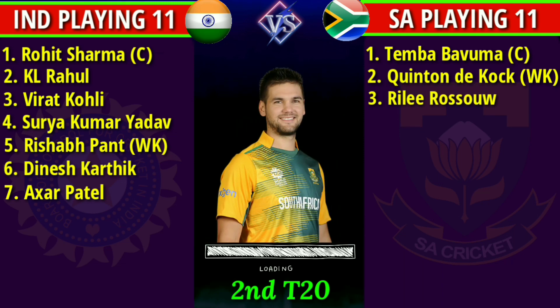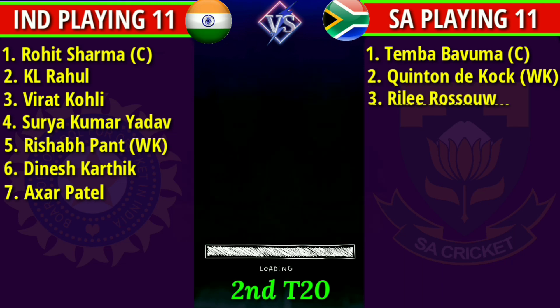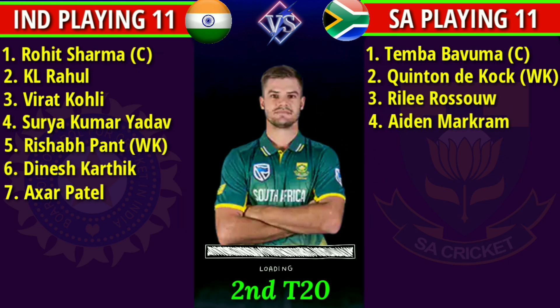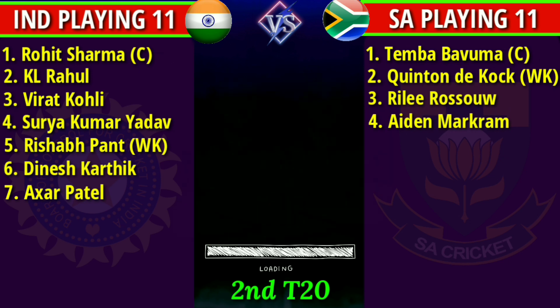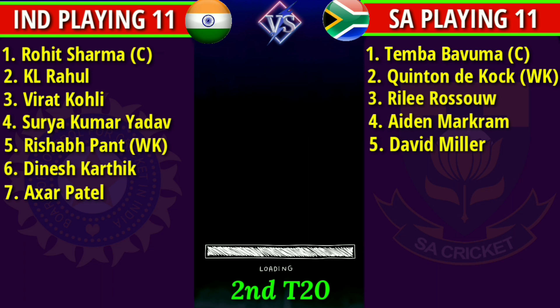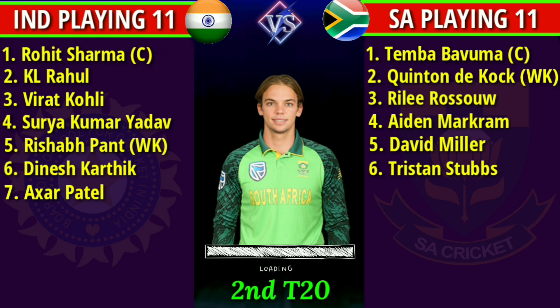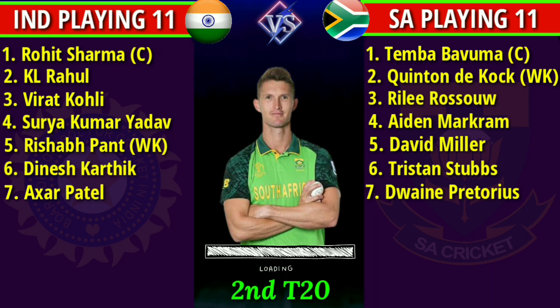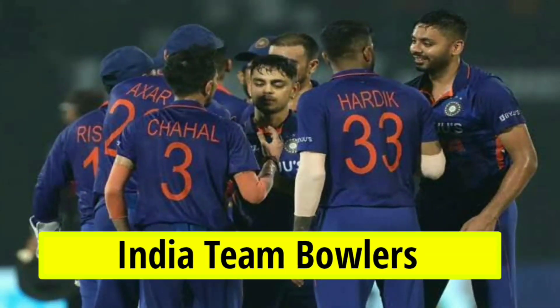Team South Africa Middle Orders: 3. Rassie van der Dussen, Left-Hand Batsman. 4. Aidan Markram, Right-Hand Batsman. 5. David Miller, Left-Hand Batsman. 6. Tristan Stubbs, Right-Hand Batsman. 7. Dwaine Pretorius, All-Rounder.